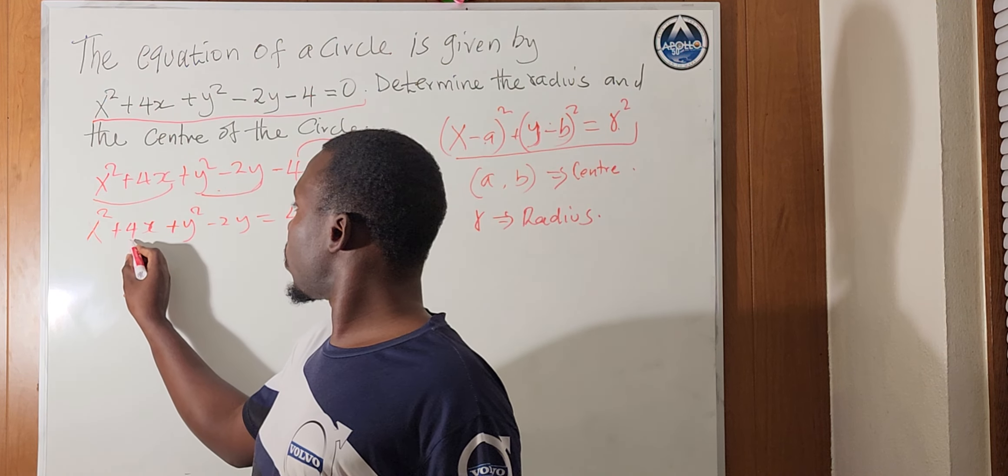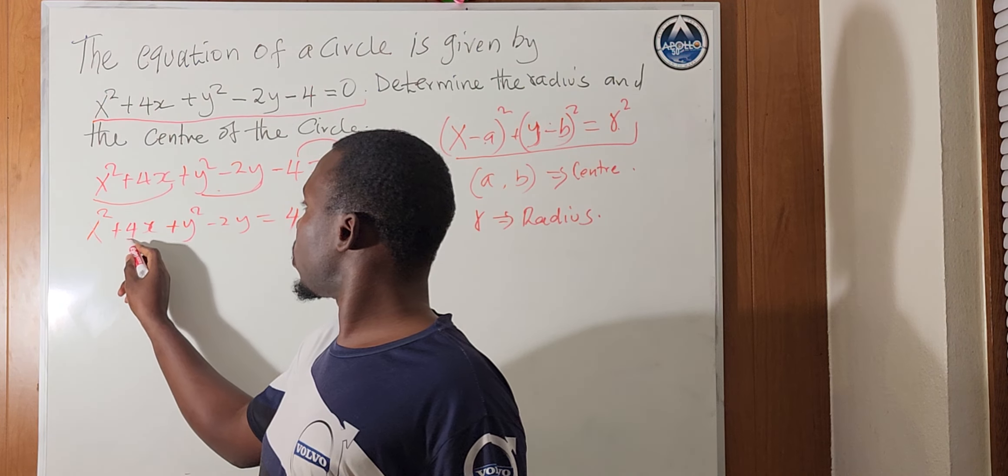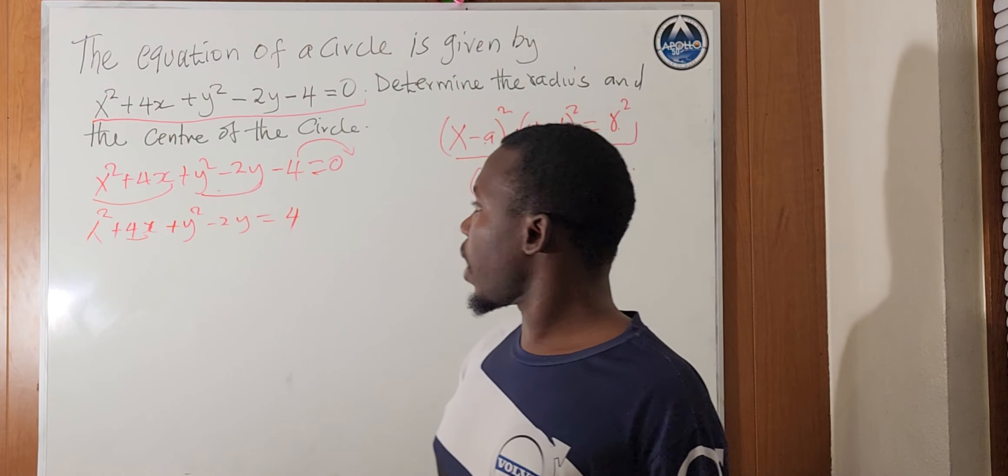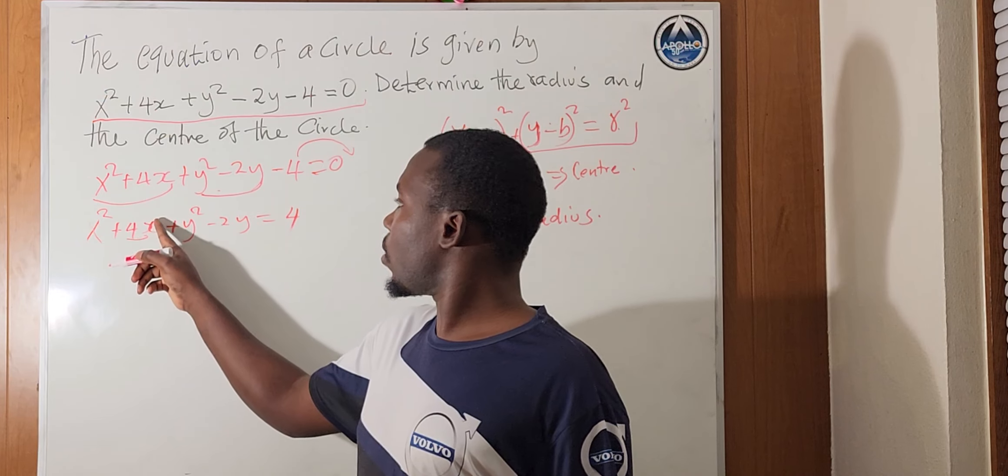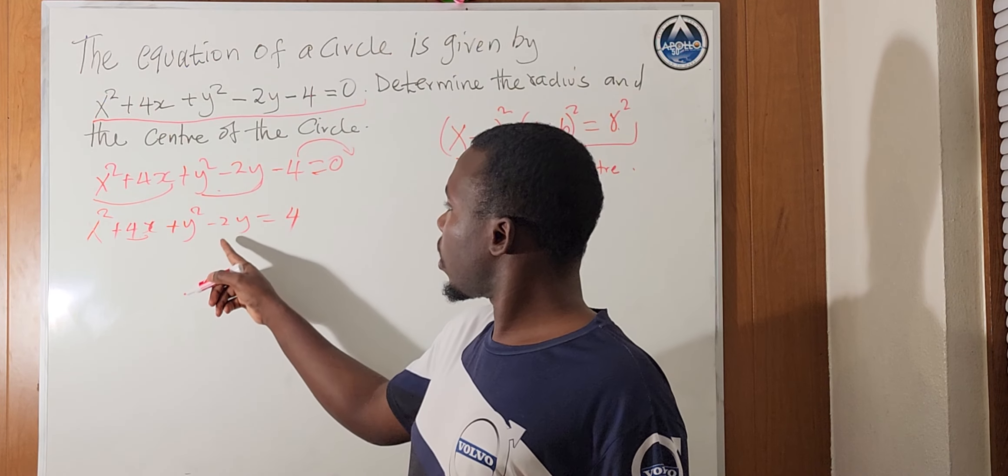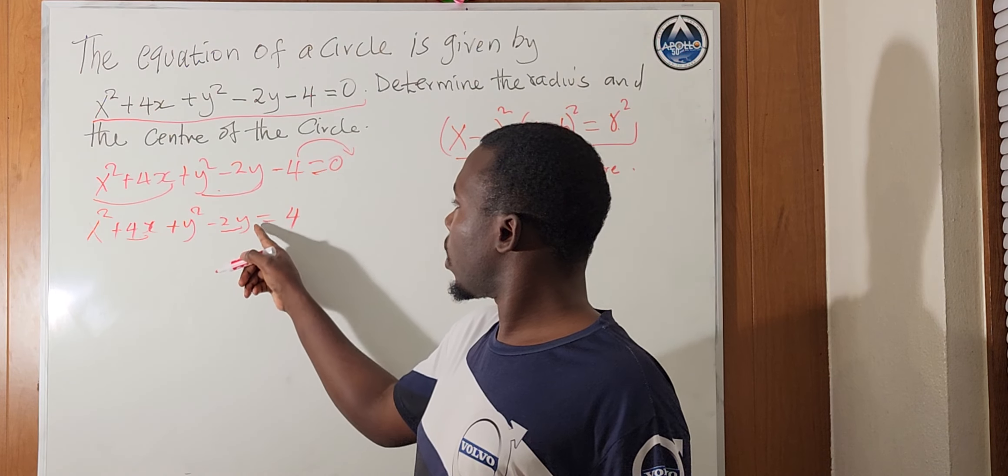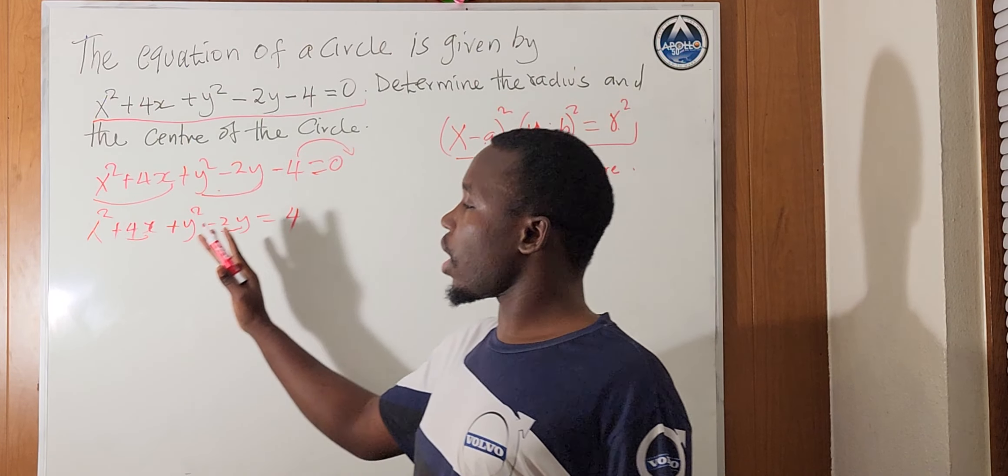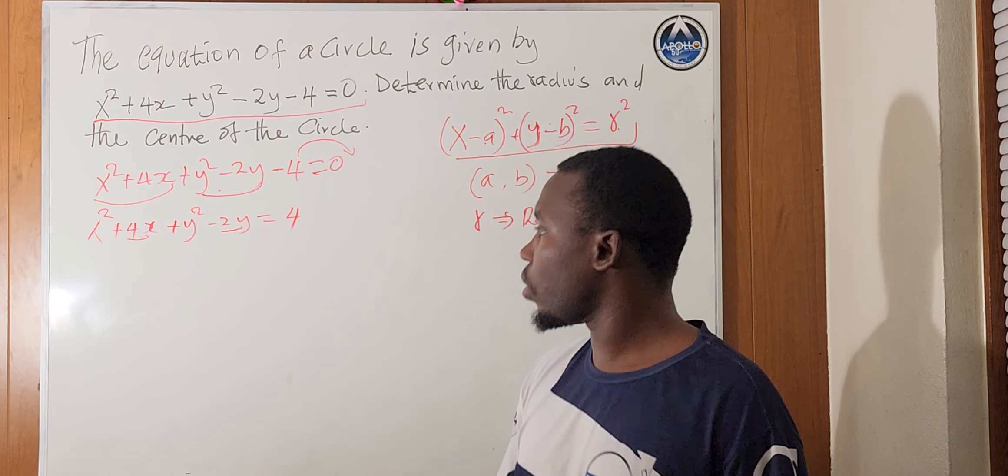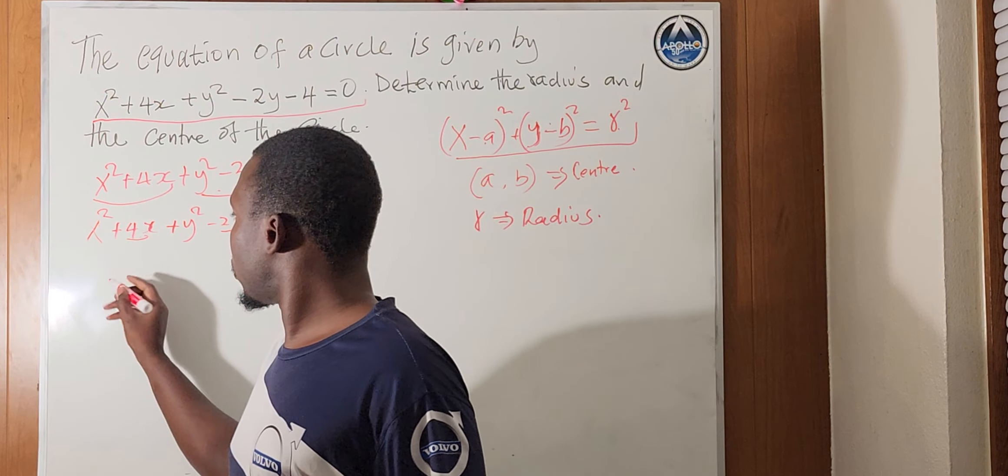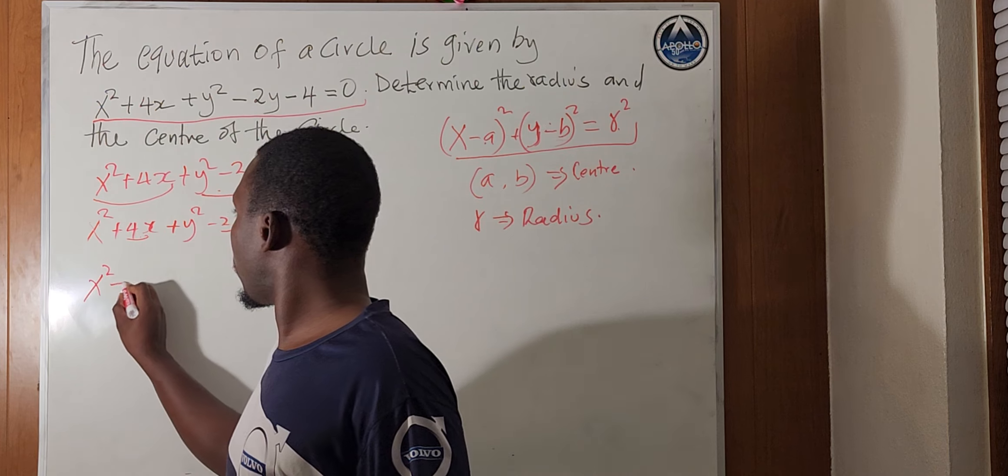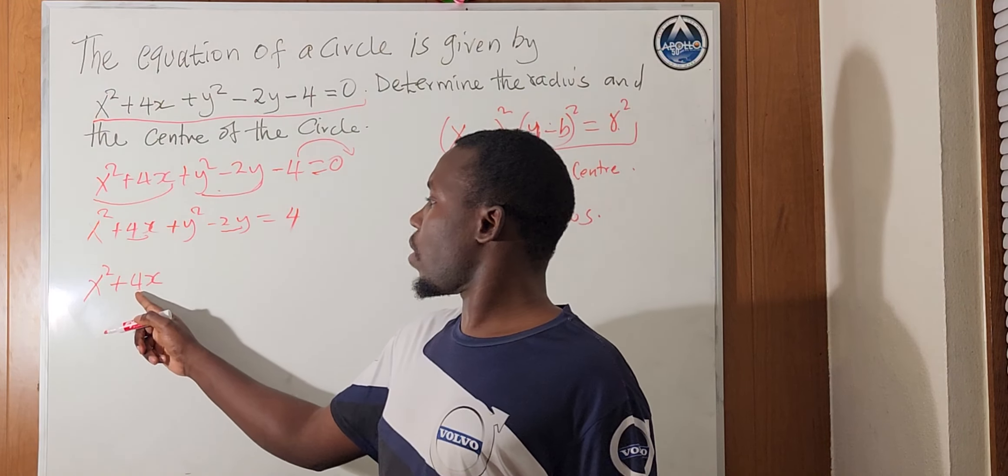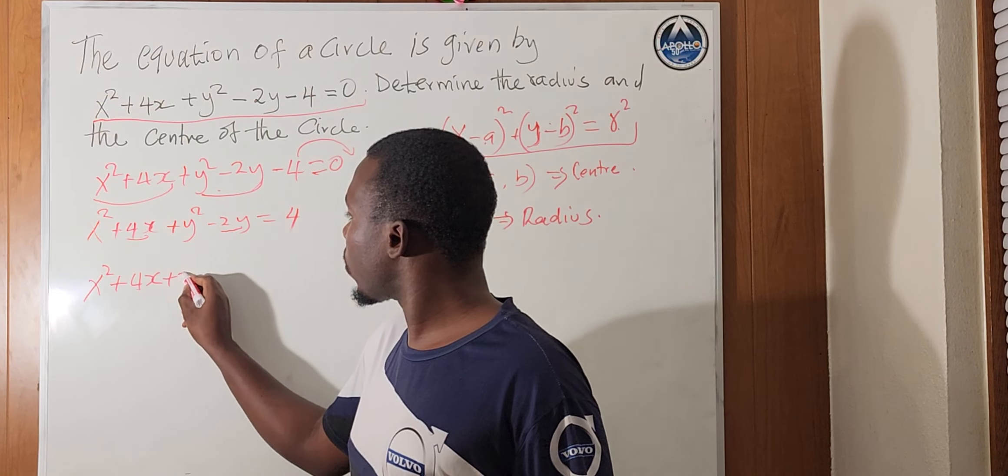So, we'll consider to complete square method, we will take half of the coefficient of x term here. Half of it, then we square that, we add here. Then take half of this term here, then we square it, we add here. Then everything, whatever we add on the right-hand side, we'll add it on the left-hand side too. So, let's see what we get. x squared plus 4x, half of 4 is 2, so we add plus 2 squared here.